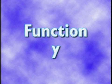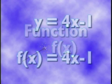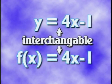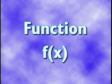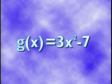Sometimes, to emphasize the fact that you're dealing with a function, the letter y is replaced by f of x — shorthand for a function of x. So the equations y equals 4x minus 1 and f of x equals 4x minus 1 are really interchangeable in most cases. Also, any other letter can be used in place of f. For example, you could see y equals 3x squared minus 7 expressed as g of x equals 3x squared minus 7.